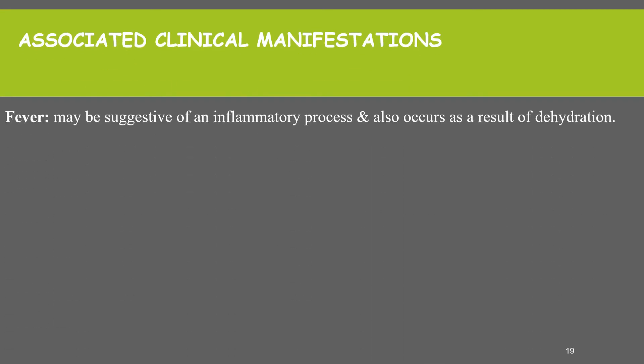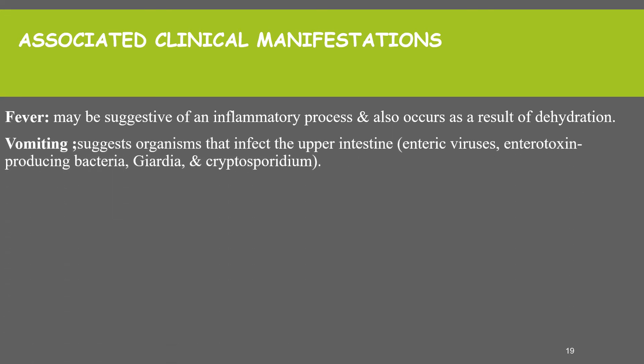When we see associated clinical manifestations of diarrhea, fever might occur — it may suggest an inflammatory process and also occurs as a result of dehydration. Vomiting suggests organisms that infect the upper intestine, and abdominal pain and tenesmus can also occur.